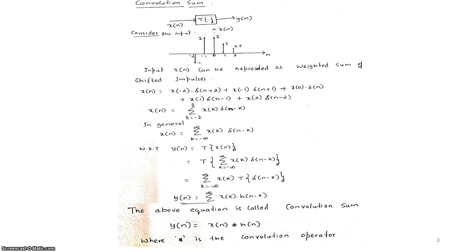This input x(n) can be represented as the weighted sum of shifted impulses. The impulse signal δ(n) has value 1 at n = 0 and 0 when n ≠ 0. Based on that, x(n) = x(-2)·δ(n+2) + x(-1)·δ(n+1) + x(0)·δ(n) + x(1)·δ(n-1) + x(2)·δ(n-2). Totally five samples are there; δ(n) shifted right by two units and shifted left by two units.